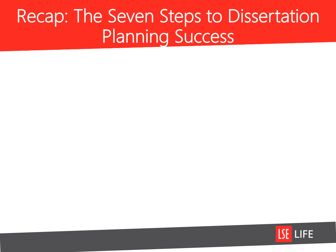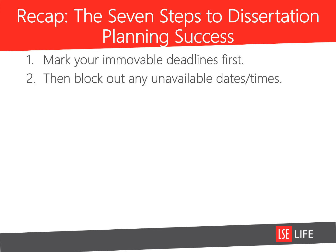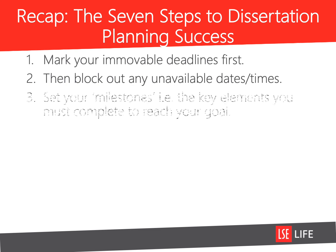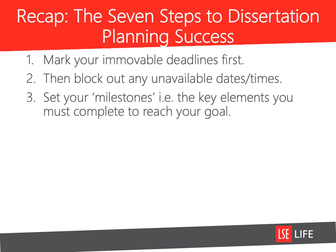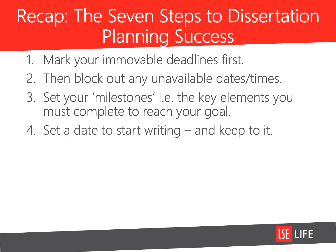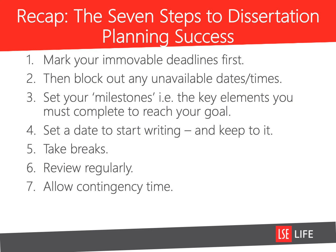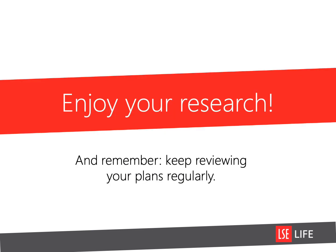So let's recap. The seven steps to successful dissertation research were: mark your removable deadlines first; block out any unavailable times and dates; set your milestones, i.e. the key elements you must complete to reach your goal; set a date to start writing and keep to it; take breaks; review your plans regularly; and allow some contingency time. Good luck with your research and the writing of your dissertation. And remember, if you keep reviewing your plans regularly, you'll be able to manage this period a lot more successfully.